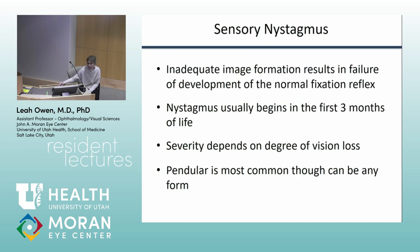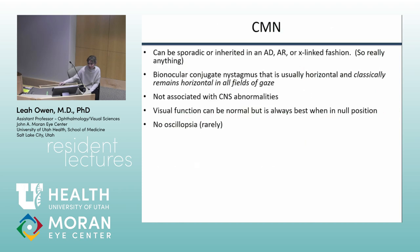Clinically, you want to differentiate sensory nystagmus — where they can't see and their eyes shake — from other types. Sensory nystagmus is most often pendular or rotary without a clear pattern. The type previously called congenital motor nystagmus, where vision is normal and it's not associated with any other health or ocular conditions, is a key entity. An important testable feature is that it remains horizontal in all directions of gaze.